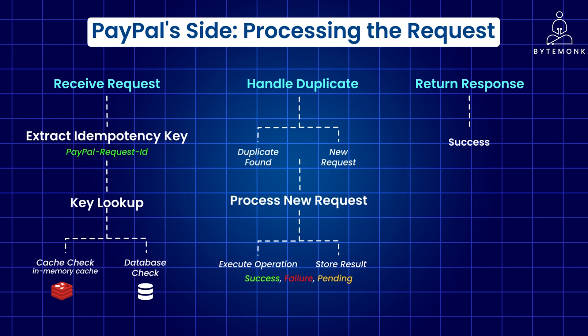If the operation was successful, the response includes details of the created payment, for example the payment ID. If the operation fails, the response includes an error code and message explaining the reason. And if the operation is still in progress — for example, in the case of asynchronous processing — the response indicates the pending status.